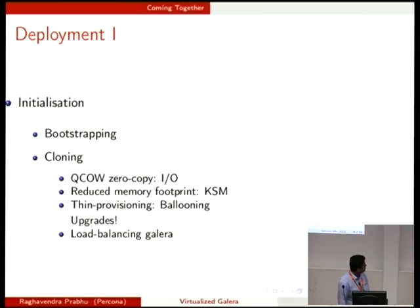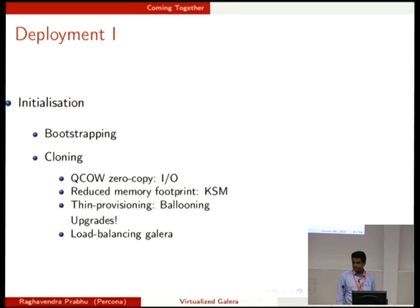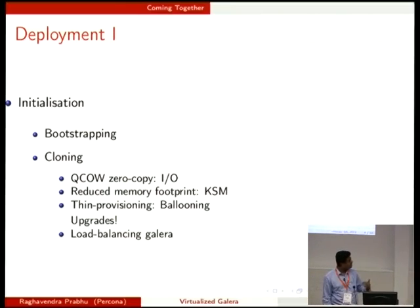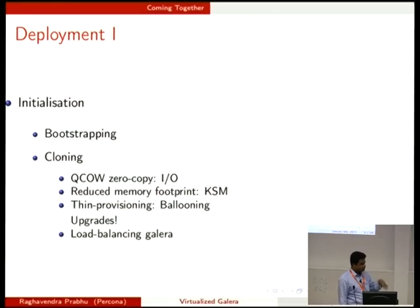You can also reduce memory footprint with KSM — kernel same-page merging — if you have multiple instances on the same hardware. It induces a certain CPU cost, but it certainly reduces the memory footprint. You can also use memory ballooning in a scenario where you have a 5.5 node and want to upgrade without bringing down the node. You can have two nodes on the same hardware, one with a lesser memory footprint, then bring down the old node slowly and bring the new one up during upgrades. Memory ballooning can be used to dynamically resize the memory of a node.